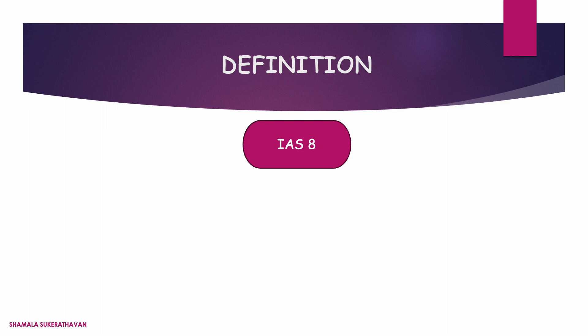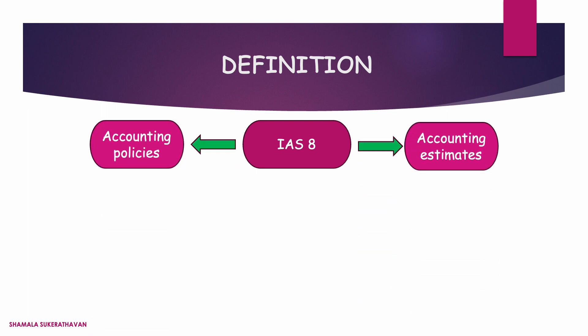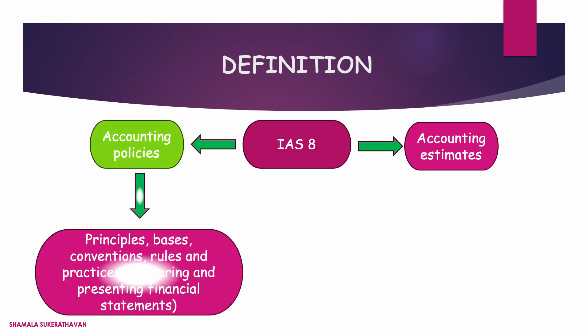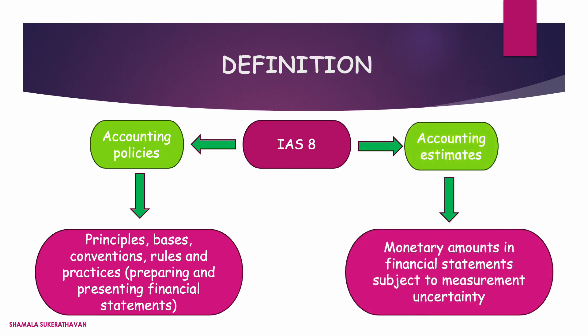IAS 8 defines accounting policies and accounting estimates as follows. Accounting policies are the specific principles, bases, conventions, rules and practices applied by an entity in preparing and presenting financial statements. Accounting estimates are monetary amounts in the financial statements that are subject to measurement uncertainty. This is due to accounting policies that may require items to be measured at monetary amounts that cannot be observed directly and therefore must be estimated instead.